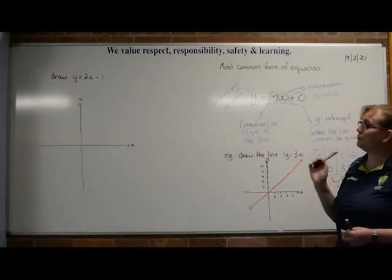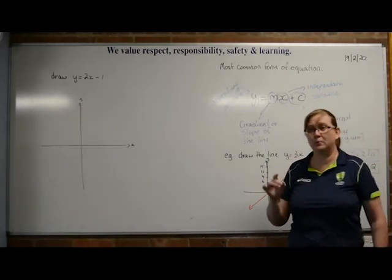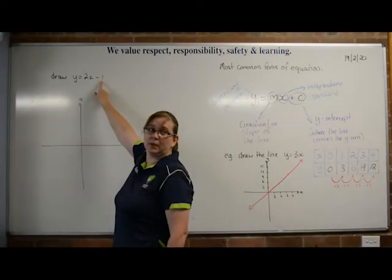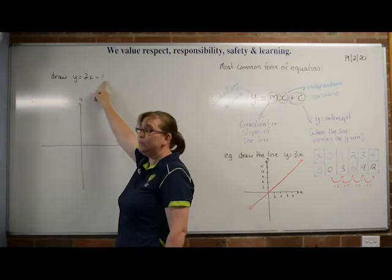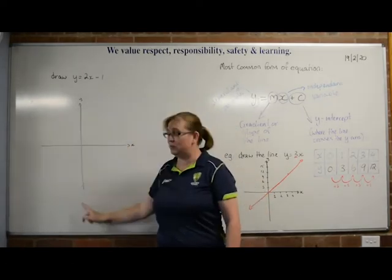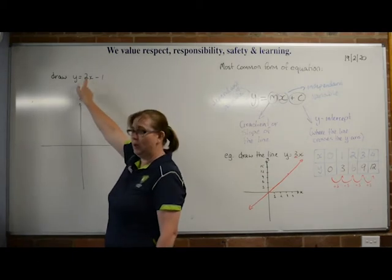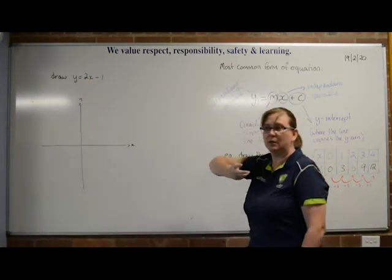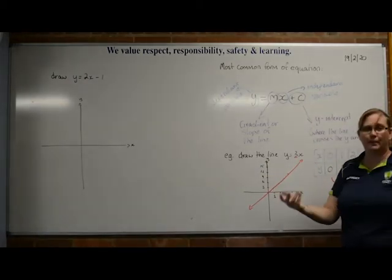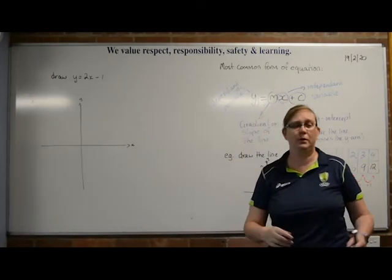This time we have y equals 2x minus 1. We can tell two things already from this equation. We have a plus c part — this one's minus 1. So that tells us it's going to go through minus 1 on the vertical. We can see here it's 2x, that's a 2. So what should my pattern be? If 3 was going up by 3s, what would the 2 be? Going up by 2s. So we already have some information we can use while we're doing this problem.